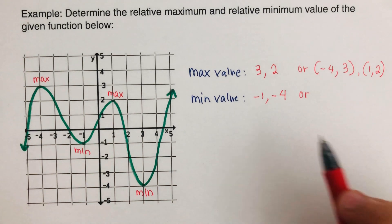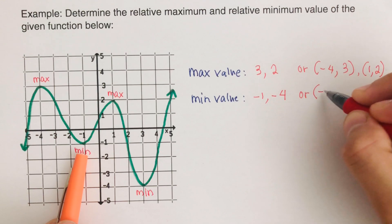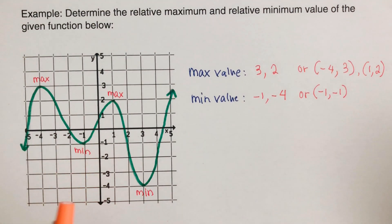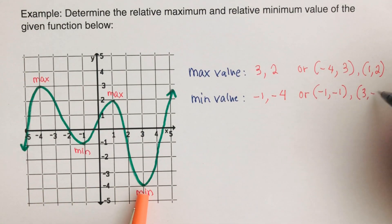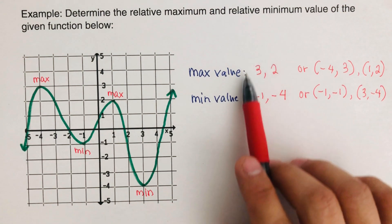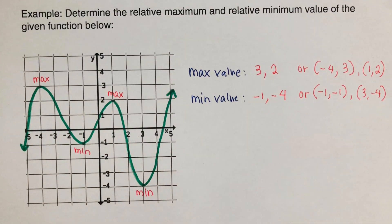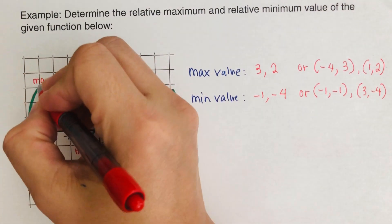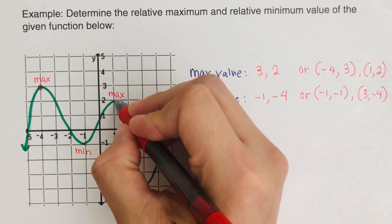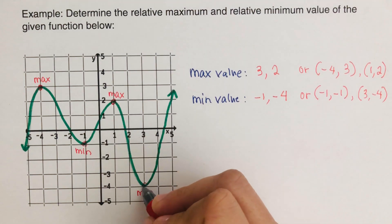On the other hand, the first minimum value as a point is (negative 1, negative 1), and the other minimum value as a point is (3, negative 4). Both notations are correct. The first notation gives the y value of the maximum or minimum point, while the other notation gives the full coordinate point. So this is a maximum point, this is another maximum point, this is a minimum point, and this is a minimum point.